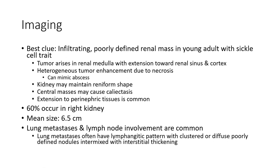Extension to perinephric tissue is common. About 60% occurs in the right kidney. Mean tumor size is 6.5 cm. Lung metastasis and lymph node involvement are common. Lung metastases often have a lymphangitic pattern with clustered, poorly defined nodules intermixed with interstitial thickening.